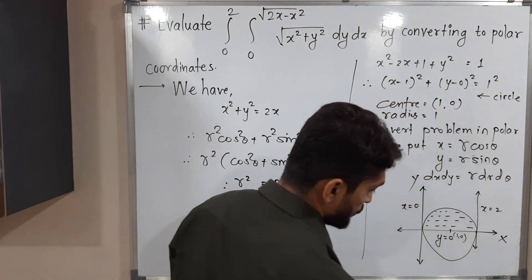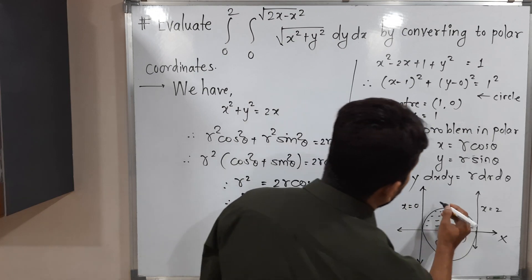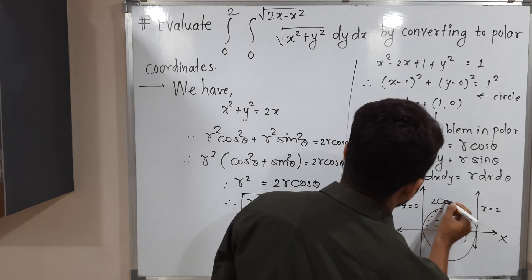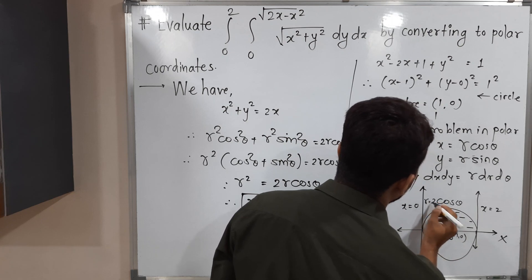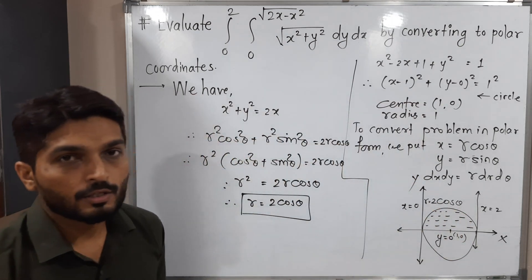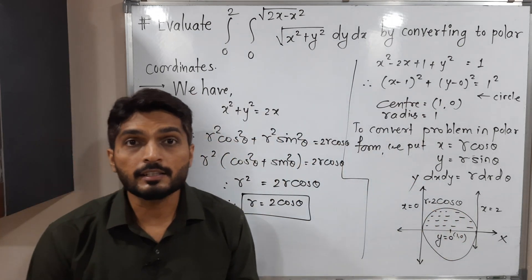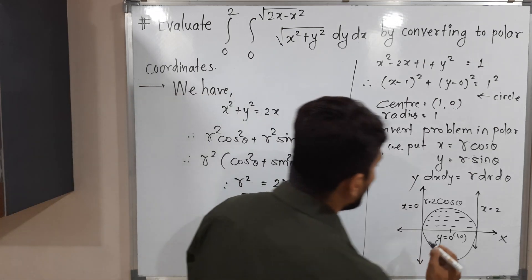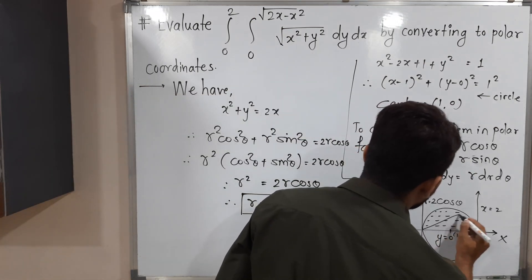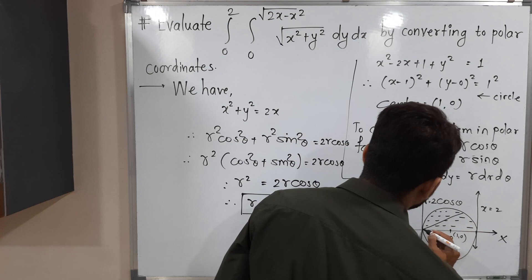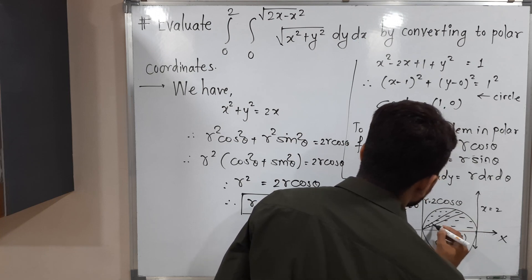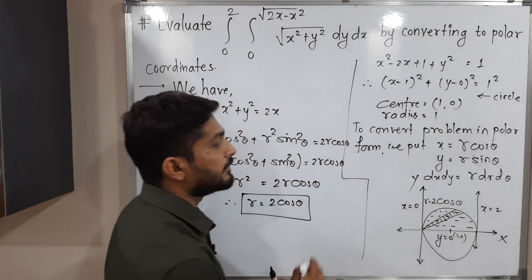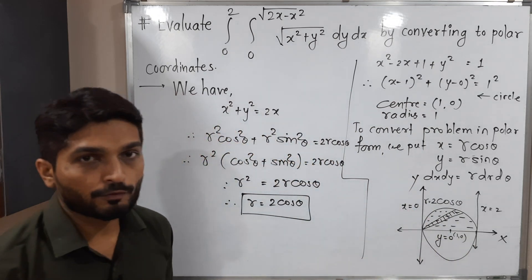So the equation of the circle in polar form is r = 2cosθ. Now we can easily find the limits. In polar coordinates, the strip starts at the origin and rotates to cover the region of integration.